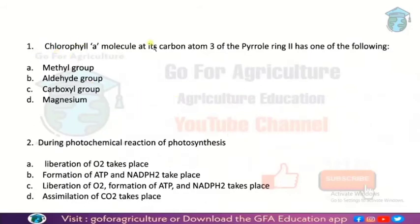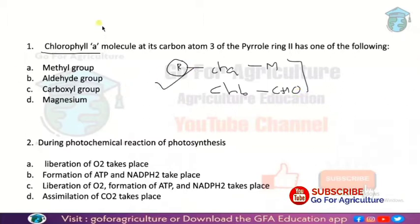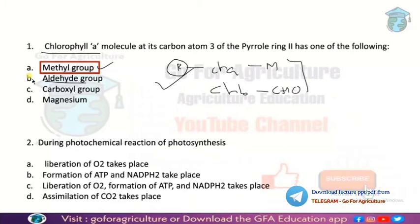First MCQ: Chlorophyll A molecule at carbon atom 3 of the pyrrole ring has which one of the following? Basically, chlorophyll A and chlorophyll B are two pigments with two structures. There is one difference between them — at a radical position there is a compound difference: chlorophyll A has a methyl group, chlorophyll B has an aldehyde group. So the answer is option A — methyl group.